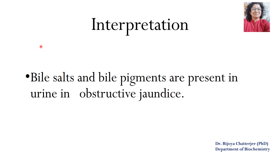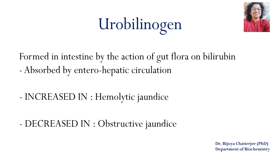If both bile salts and bile pigments are found in the same urine sample, it is indicative of obstructive jaundice. Urobilinogen, which is formed in the intestine by the action of gut flora on bilirubin, is absorbed via enterohepatic circulation. It is seen to increase in urine in hemolytic jaundice and decrease in obstructive jaundice.